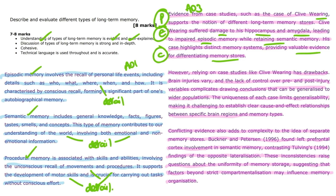This same structure — point, explain, consequence — is then repeated in the following two evaluative paragraphs. The response is cohesive and has a smooth flow between the different types of long-term memory (AO1 material) into the evaluation points (AO3). It moves clearly from outlining different memory types to discussing the strengths and limitations.